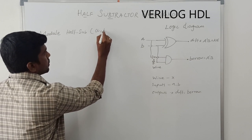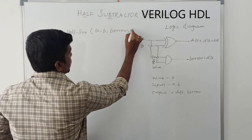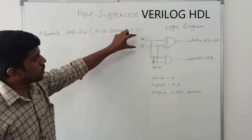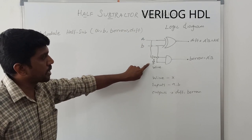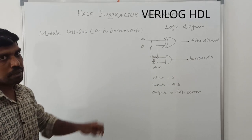A comma, B comma, borrow comma, difference. These four variables are used in a logical diagram. This X is wire. Wire is not declared within a bracket.